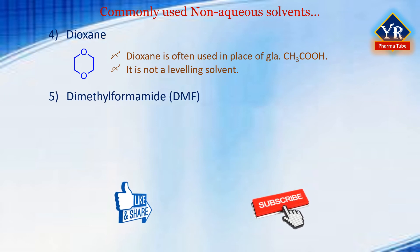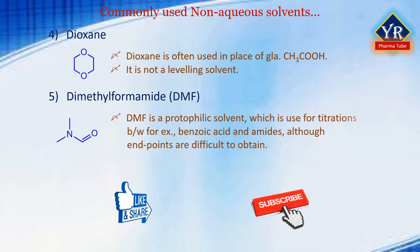5. Dimethyl formamide is a protophilic solvent which is frequently employed for titrations between benzoic acid and amines, for example, although endpoints may sometimes be difficult to obtain.